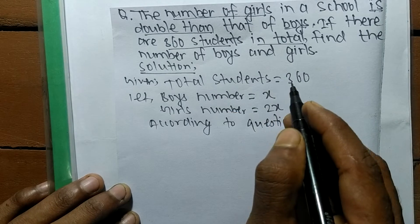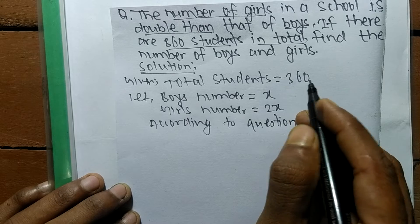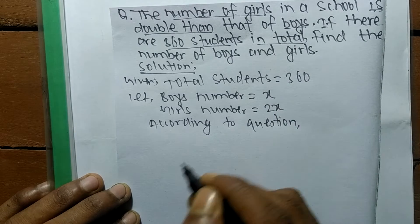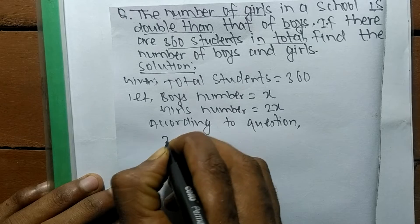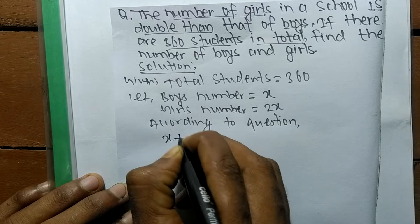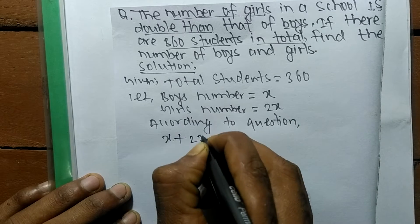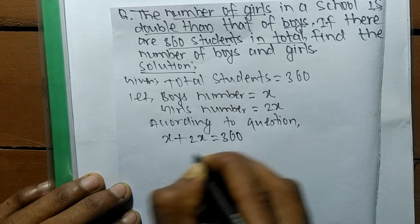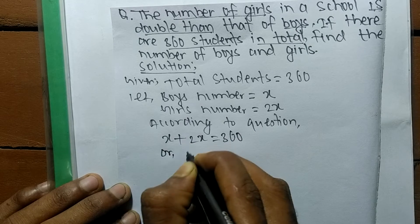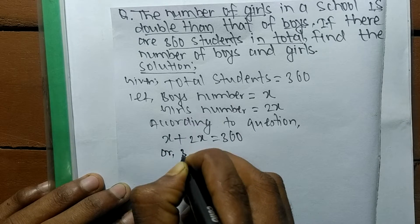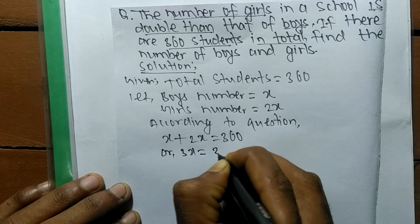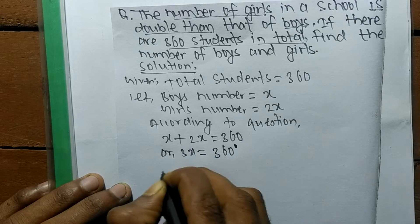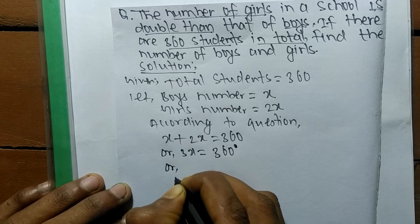Now, according to the question, total students means the sum of the number of boys and girls. So boys, which are X, plus girls, which are 2X, is equal to 360. So X plus 2X gives 3X equal to 360.